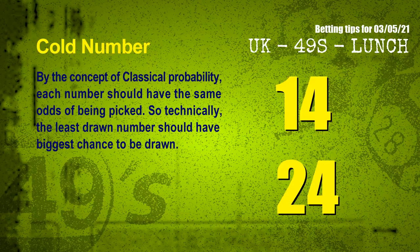In the end of this video, we have two more tips for you: cold numbers and overdue numbers. By the concept of classical probability, each number should have the same odds of being picked. So technically, the least drawn number should have the biggest chance to be drawn. After counting thousands of results, we find out the coldest two numbers for the next draw will be 14 and 24.